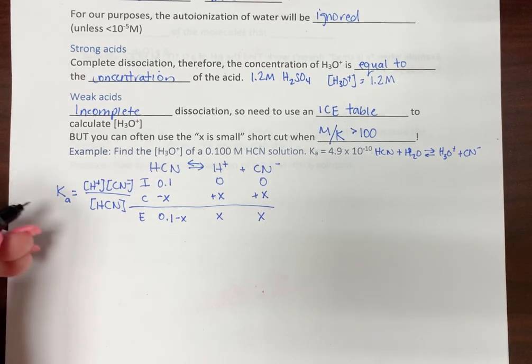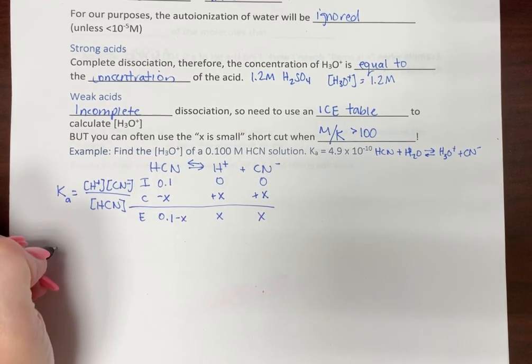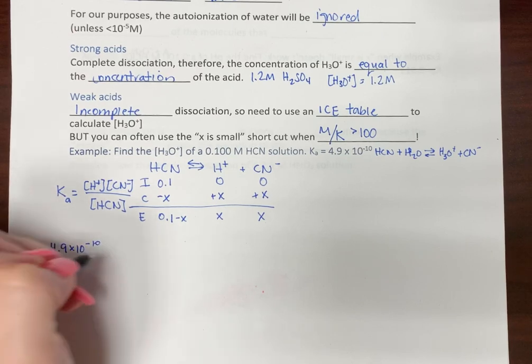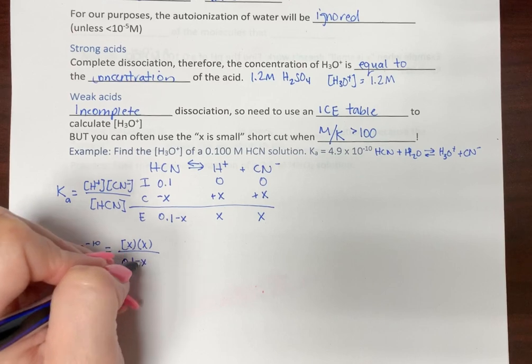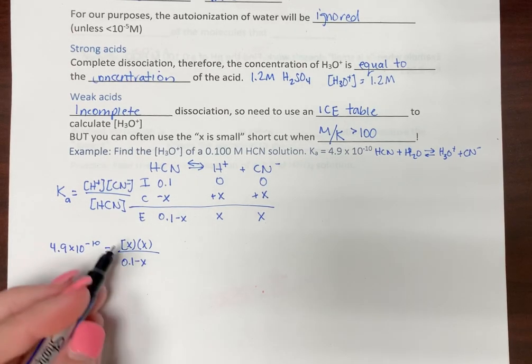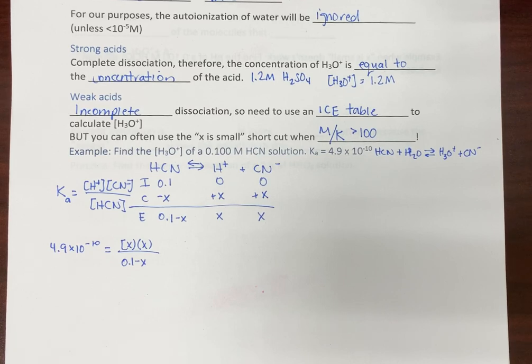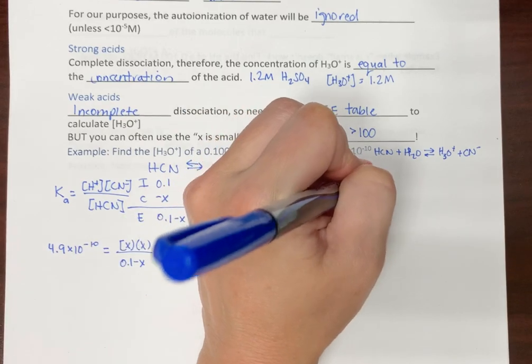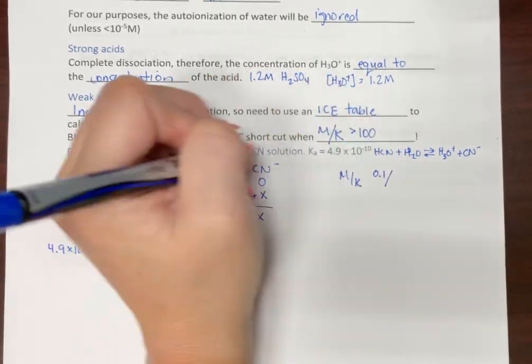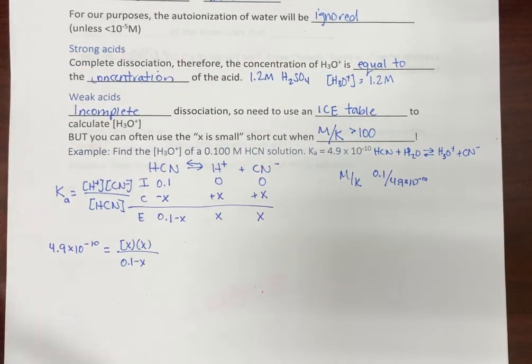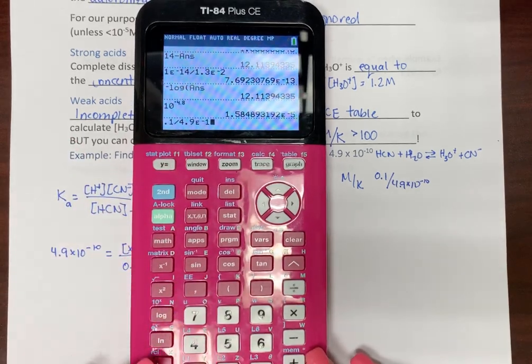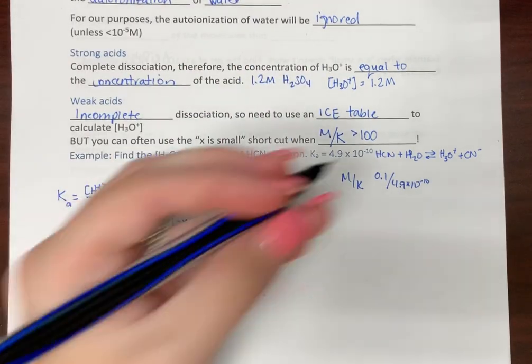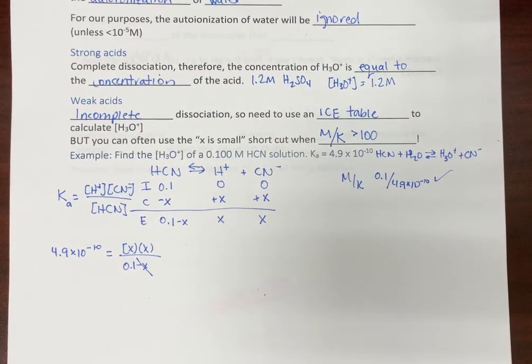So now here we have Ka. So we have 4.9 times 10 to the negative 10th. Plug and chug. x times x over 0.1 minus x, right? So most of the time, I'll write that as x squared. Now, can we use x is small? Say, please say yes. So M over K, that would be 0.1 over 4.9 times 10 to the negative 10th. Do you know, if you know anything about properties of exponents, you're going to go, I don't even need to put that in the calculator. But if you don't, let me show you putting it in the calculator. That is much greater than 100. Do we agree? Yes. So x is small. Boom. x goes away. Yes, we like that.